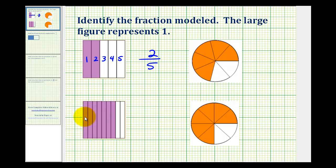Looking at the second example, notice that the square is divided up into one, two, three, four, five, six, seven, eight, nine equal pieces. So our denominator would be nine, and seven of those nine pieces are shaded. Therefore, this represents seven-ninths.